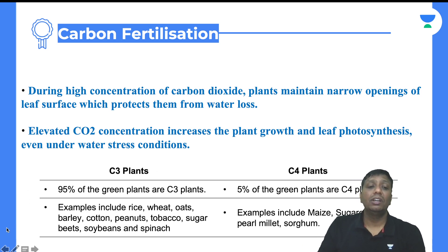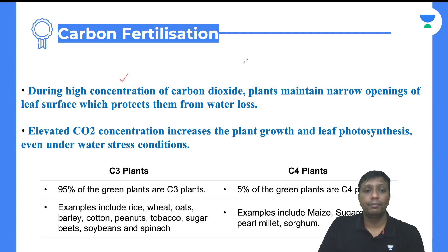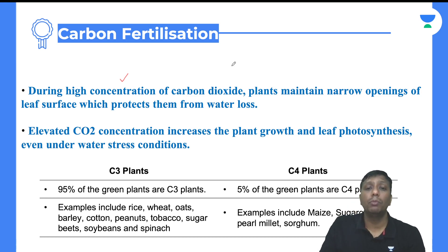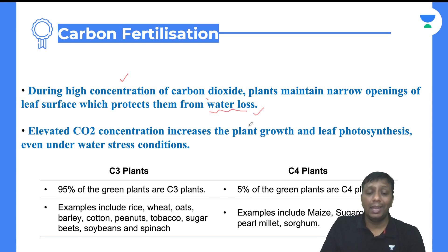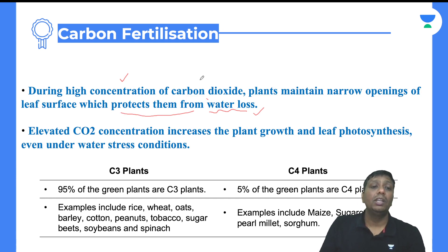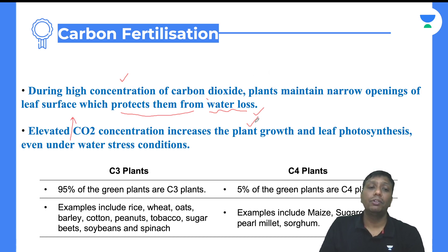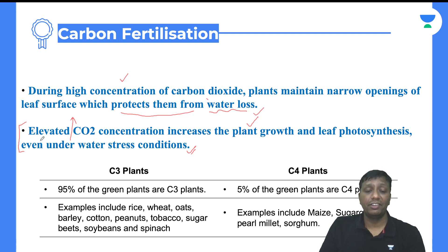In higher concentration of carbon dioxide, there are more benefits in carbon fertilization. Whenever the concentration level of carbon dioxide increases in the atmosphere, the leaf opening will become narrower — it will not open as much anymore. This is the reason the rate of transpiration will be low, resulting in less water loss. Elevated carbon dioxide concentration increases plant growth and leaf photosynthesis even under water stress conditions.